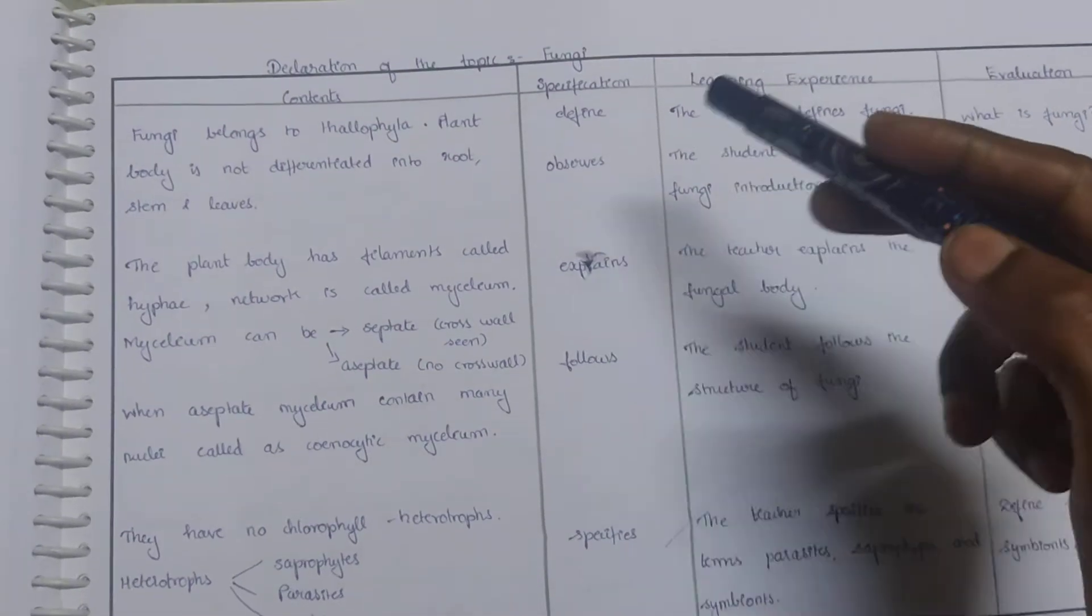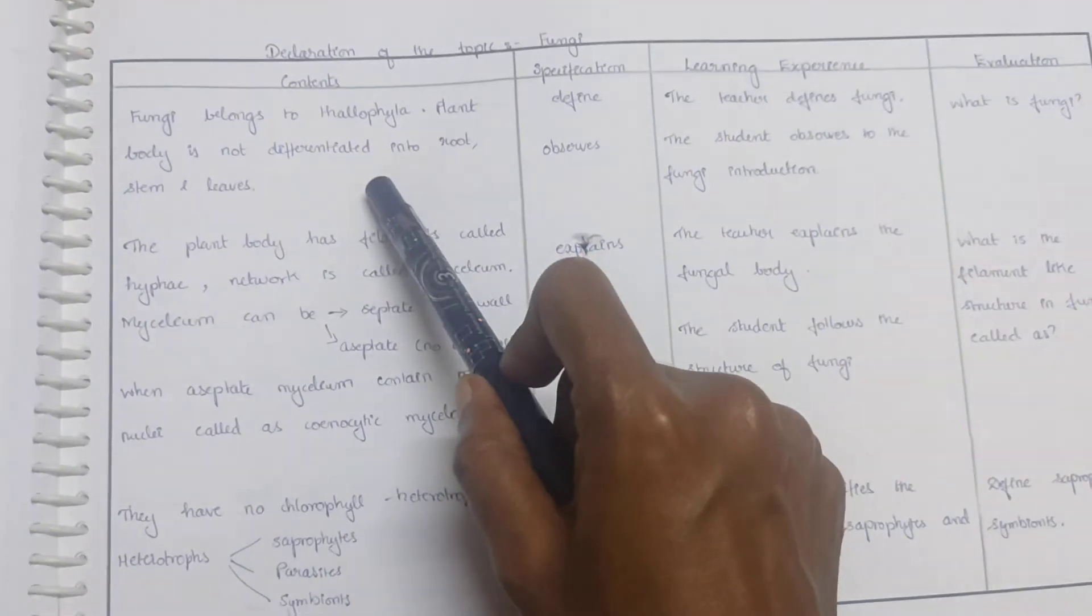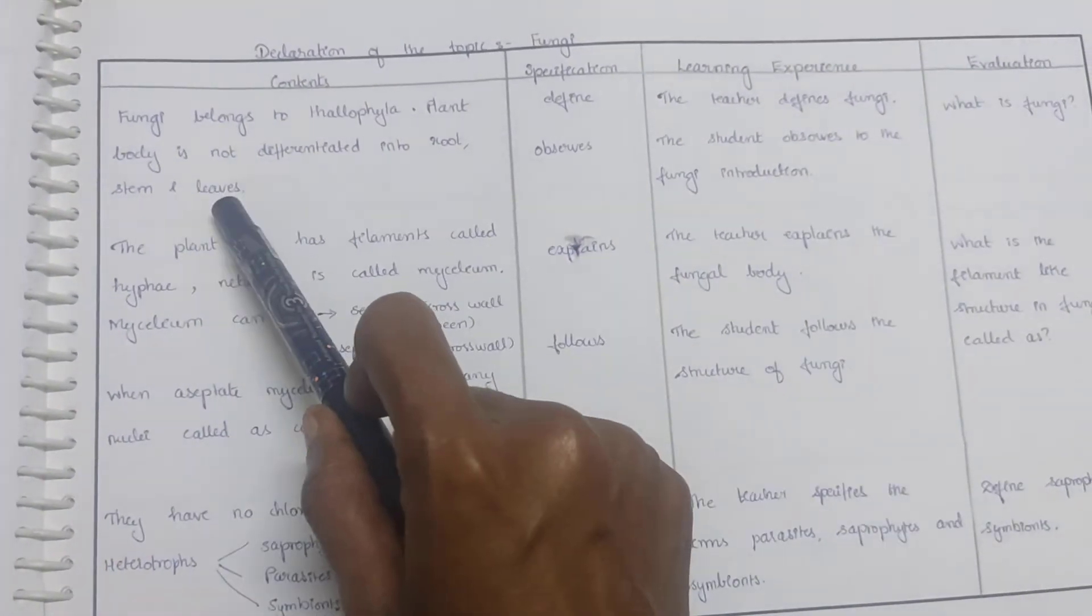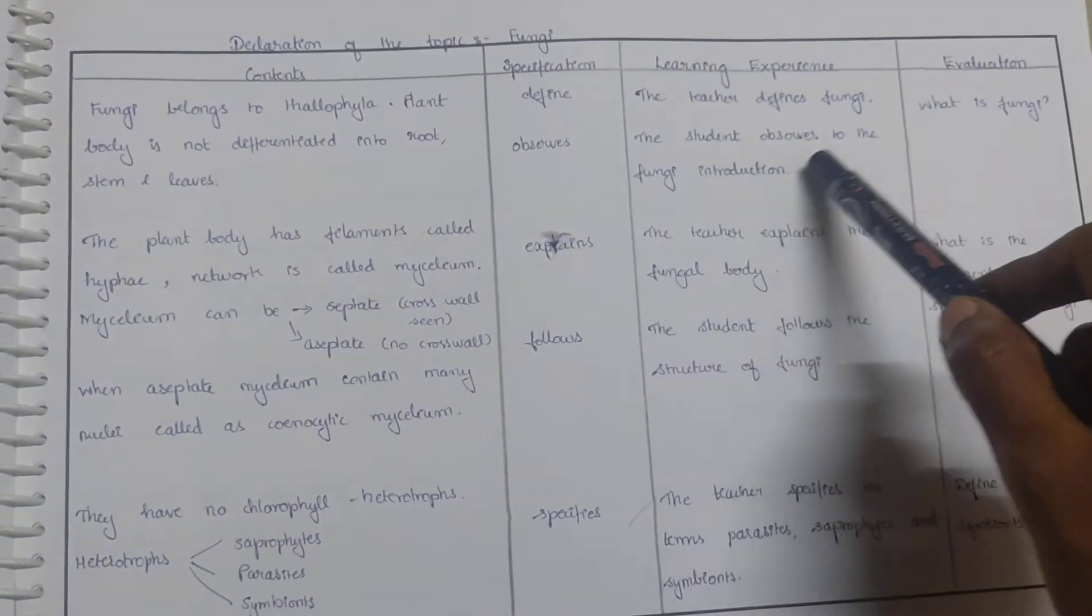Now, declaration of the topic: fungi. Fungi belongs to thallophyta. Plant body is not differentiated into roots, stem, and leaves. The teacher defines fungi and the student observes.